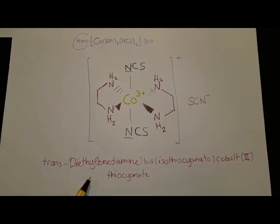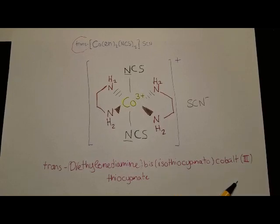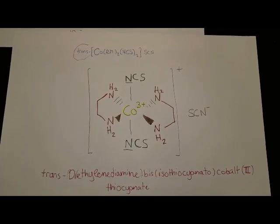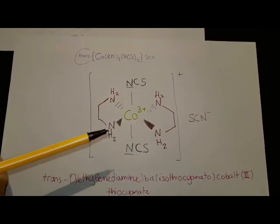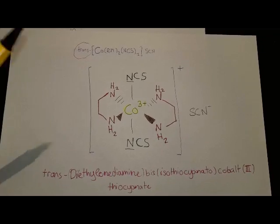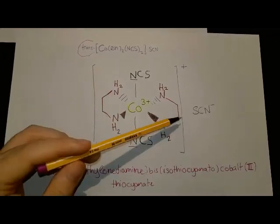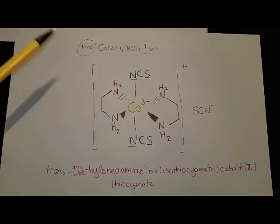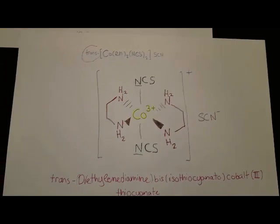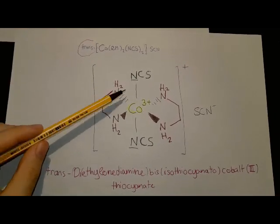It's called trans-diethylenediamine bisisothiocyanato-cobalt-3-thiocyanate. It's a bit of a mouthful, but actually it's a really simple mononuclear ethylenediamine cobalt complex. So we have one cobalt at the center, which is bound to two ethylenediamines, which are both bidentate ligands. Ethylenediamine is a bidentate ligand and it bonds to metals through both amine groups.